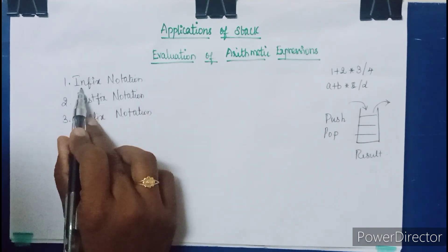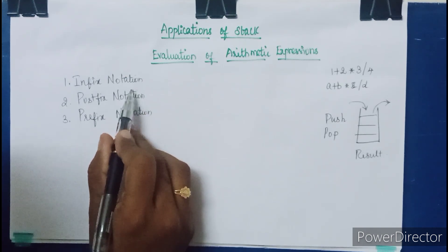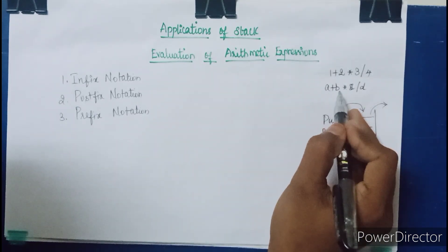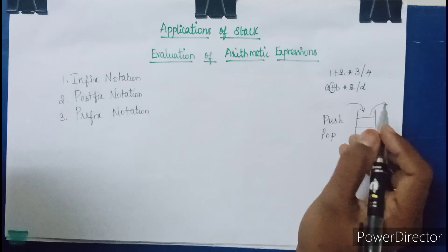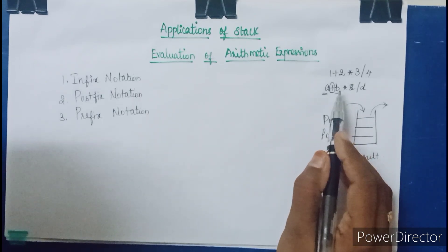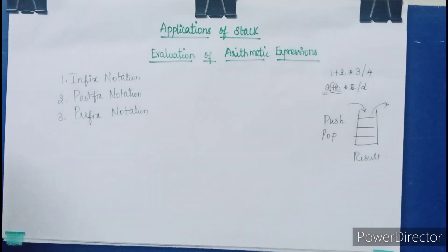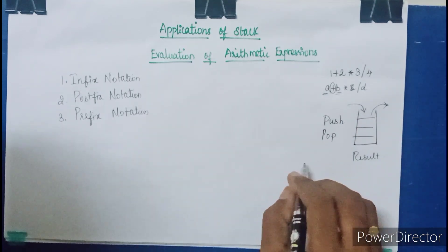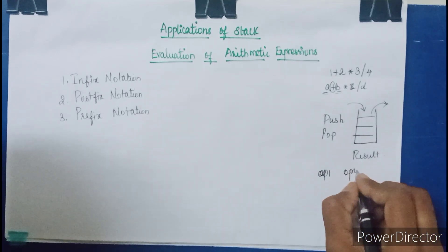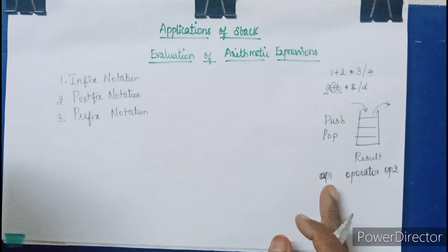Infix notation is the familiar one which we use to calculate or evaluate expressions manually. In an infix expression, the operator is placed in between the operands. For example, A plus B — the operator plus is placed between operands A and B, meaning we perform an addition operation on the values of A and B. The format is: operand 1, operator, operand 2. This is called infix notation.